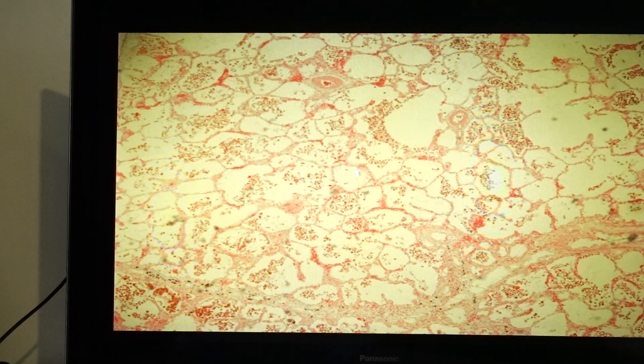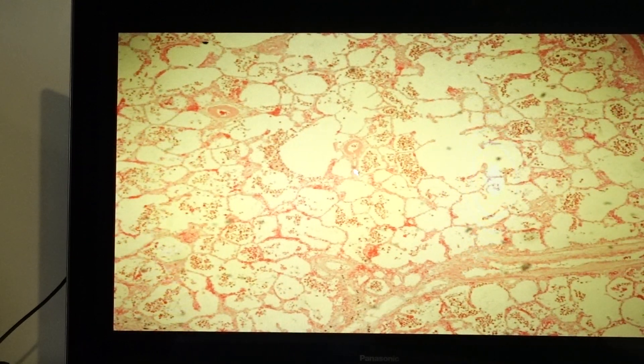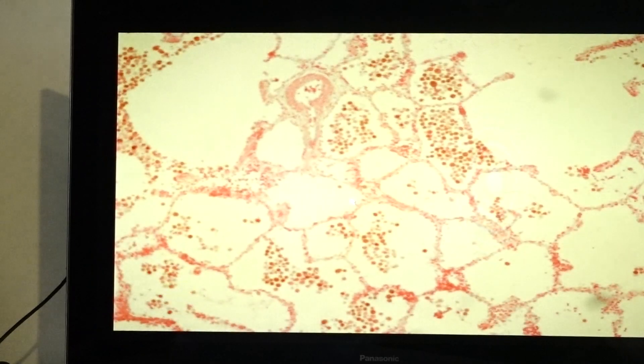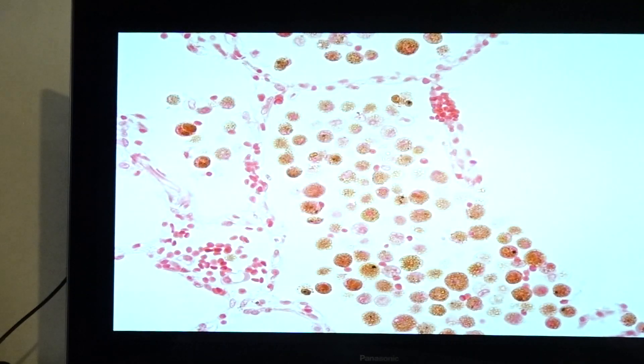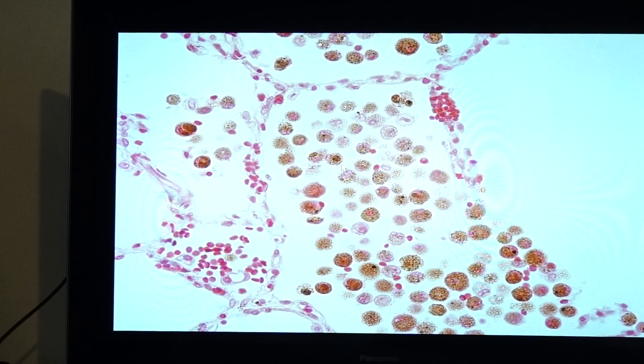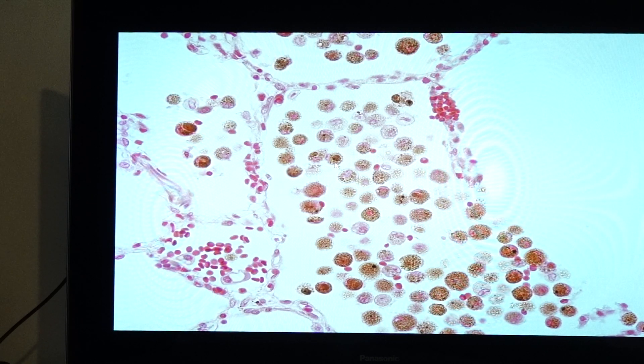Our last slide for today's session would be chronic passive congestion of the lung, which I think is familiar to you already as we have discussed this in the chapter on hemodynamic disorder. This is a lung tissue. You can identify readily the presence of the alveoli. And there's a presence of a lot of cells within the alveolar space. We would see the presence of hemosiderin-laden macrophages, macrophages that would engulf the hemosiderin. And this particular condition, the chronic passive congestion of the lung,